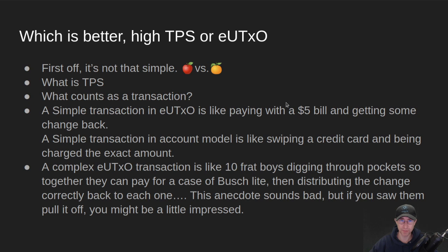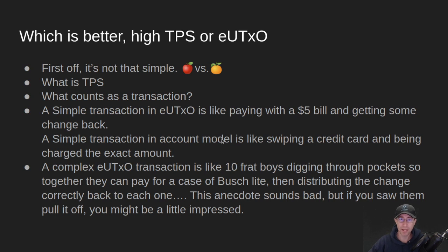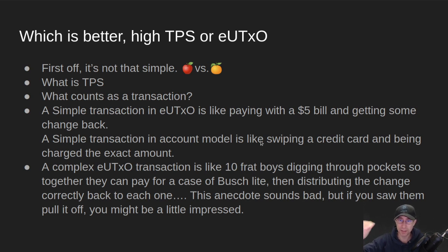To describe the different types of transactions: a simple transaction in extended UTXO is like paying with a $5 bill and getting some change back — you drive down to the 7-Eleven, get yourself an RC Cola, all you've got is a $5 bill and you get back some change. A simple transaction in the account model is like swiping a credit card and your account being debited by the exact amount needed — no change exchanged, just an account with a balance that goes down.